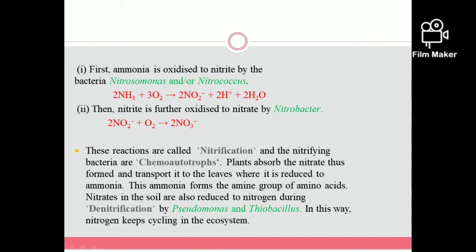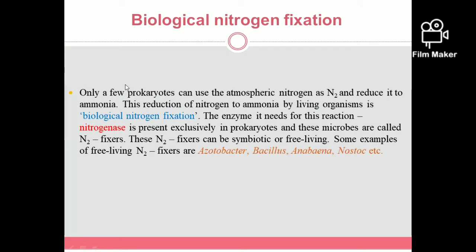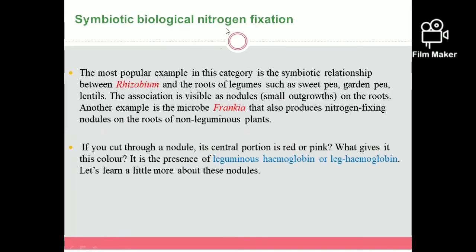Biological nitrogen fixation is performed by organisms called nitrogen fixers. These nitrogen fixers are either symbiotic or free-living. Examples of free-living nitrogen fixers include Azotobacter, Bacillus, Anabaena, and Nostoc. The most popular example of symbiotic biological nitrogen fixation is the symbiotic relationship between Rhizobium and the roots of legume plants.